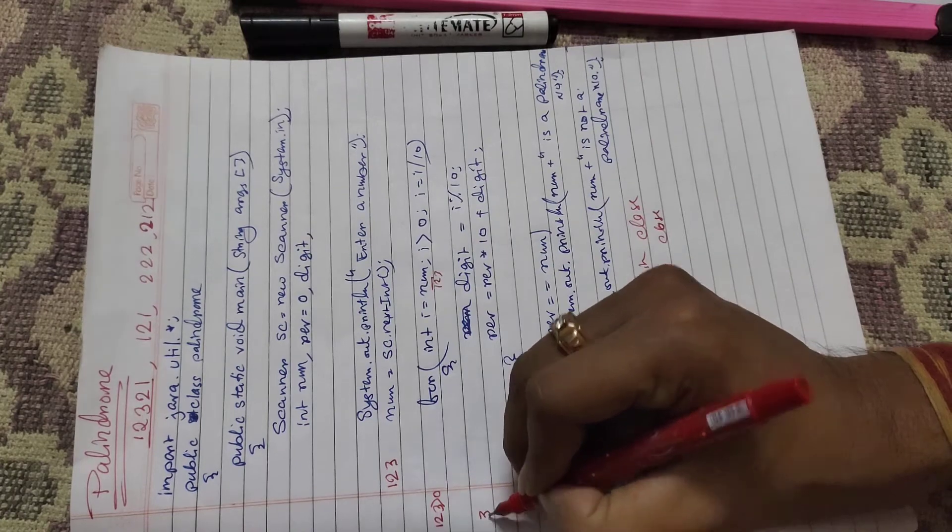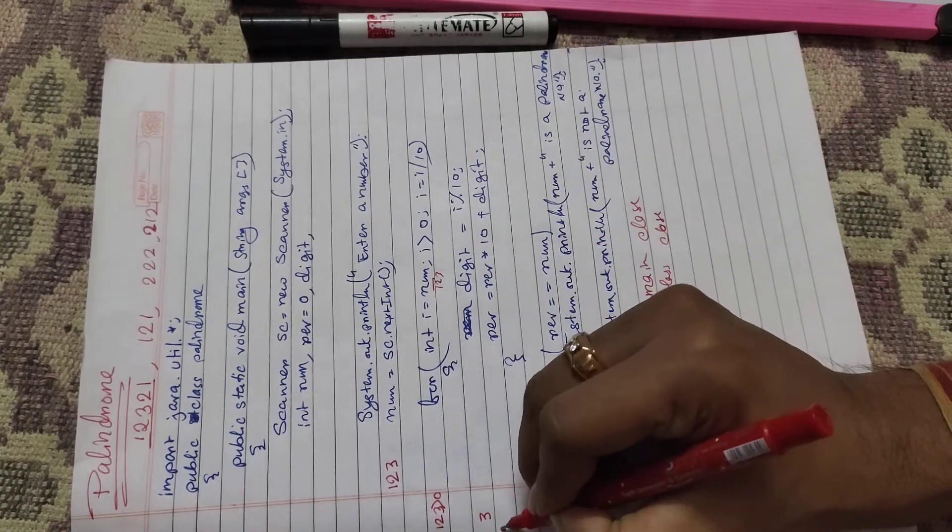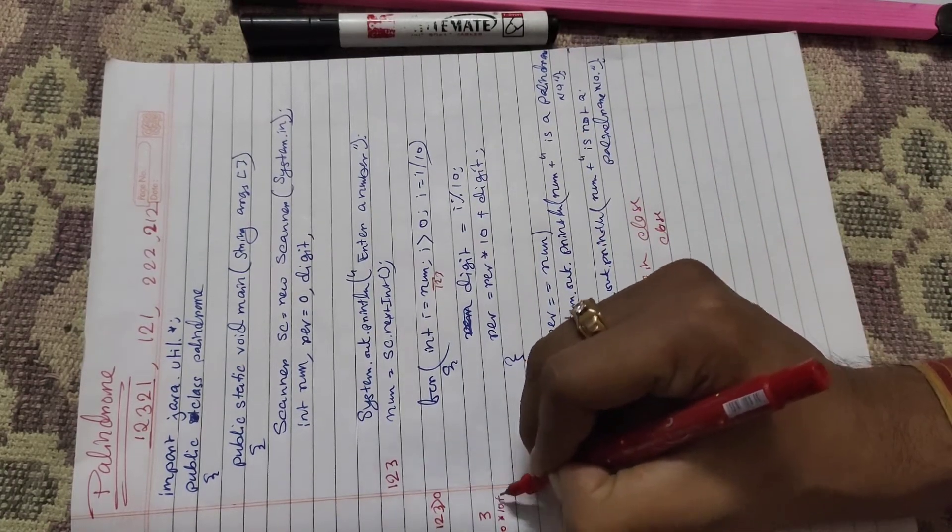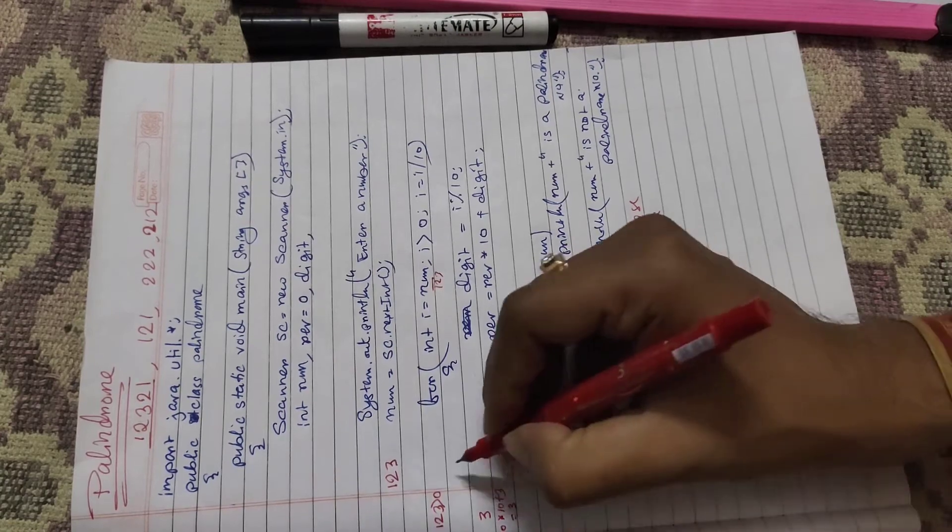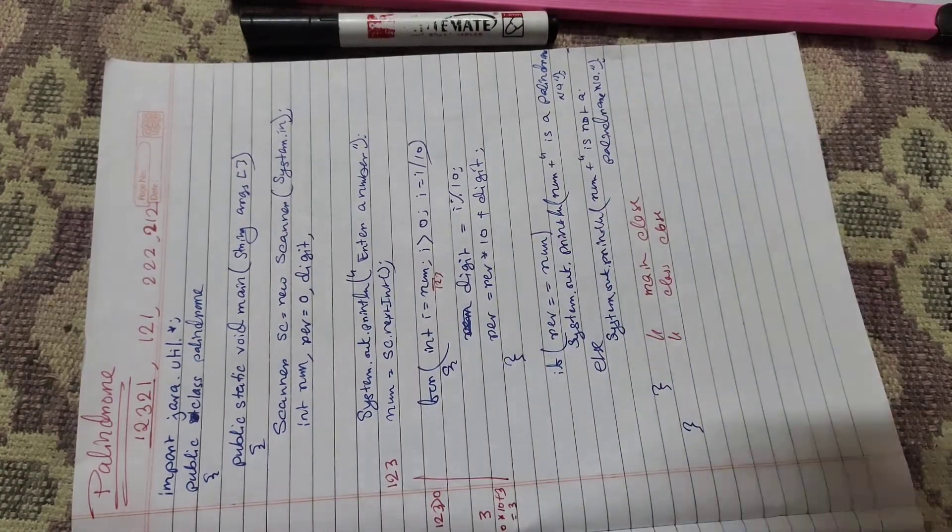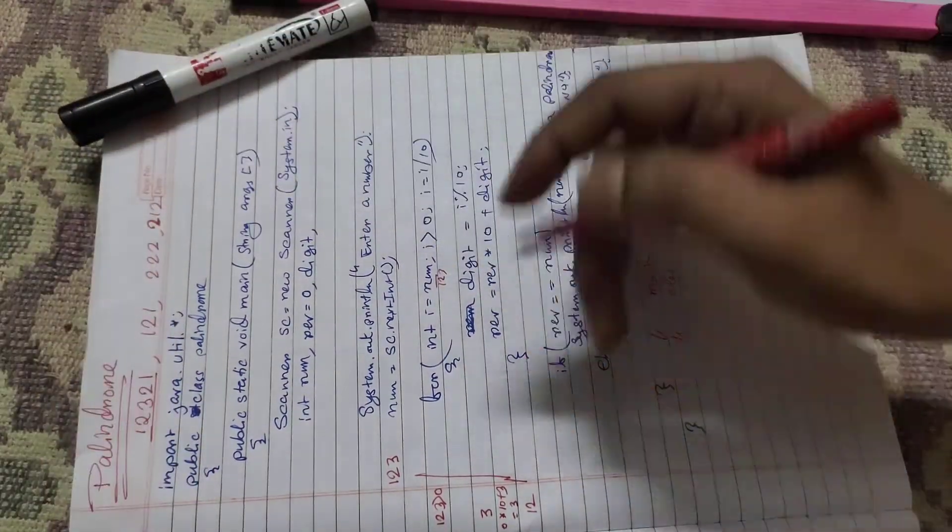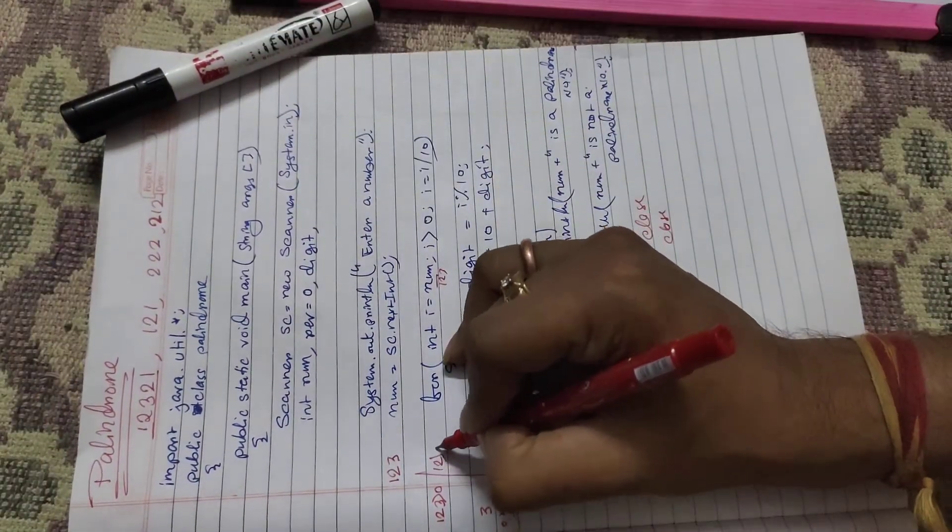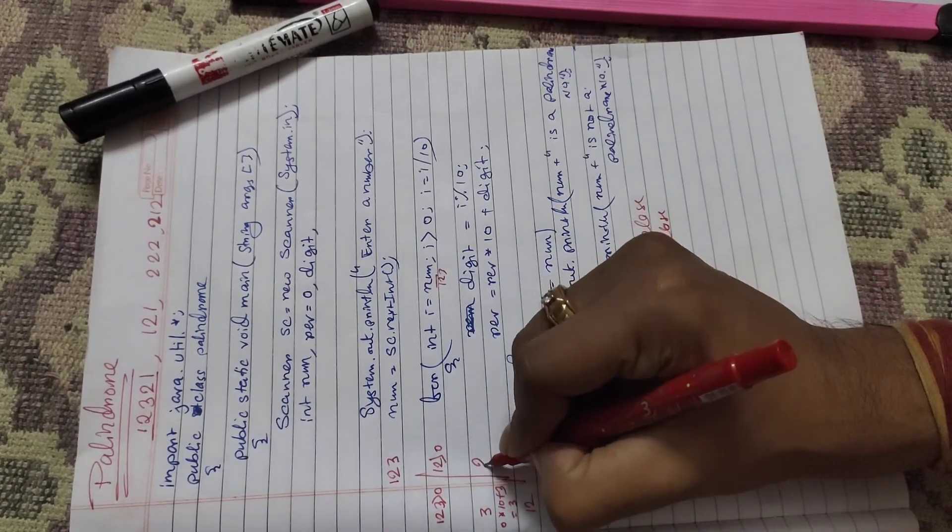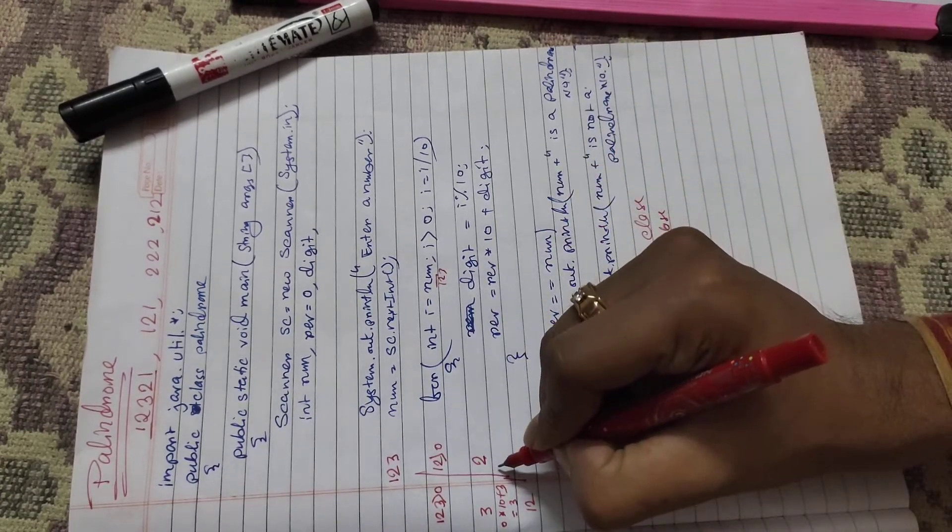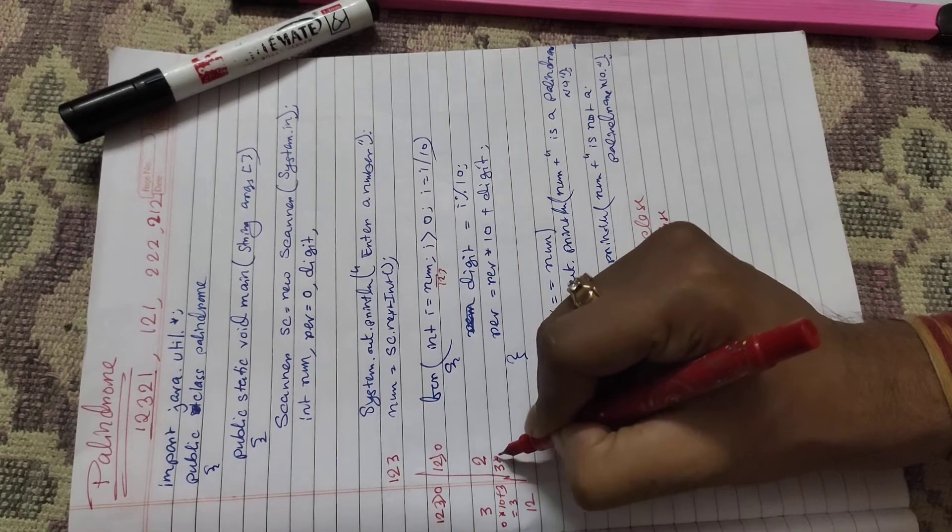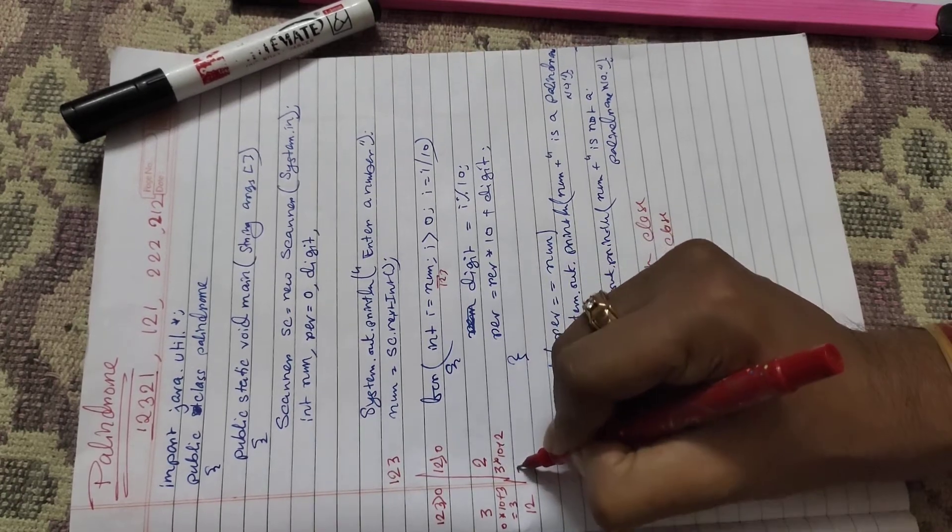Digit equals 3. Rev equals 0 into 10 plus 3 equals 3. Then the value of i is 12 divided by 10. Digit will be 2, and rev equals 3 into 10 plus 2 becomes 32.